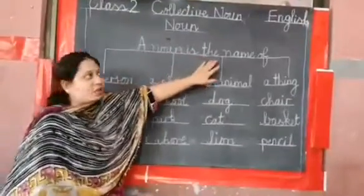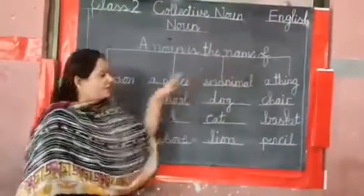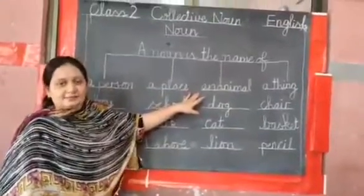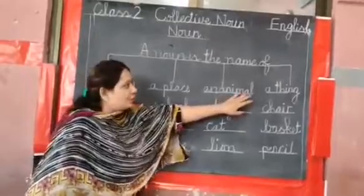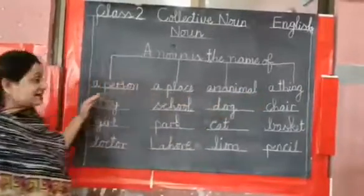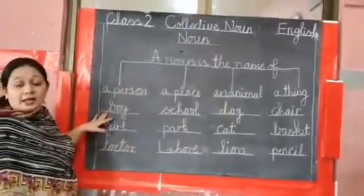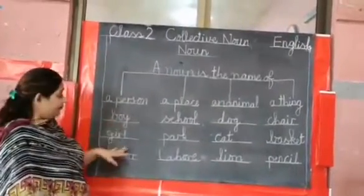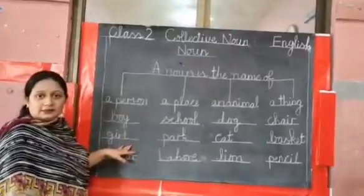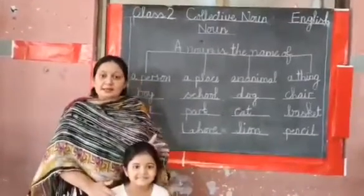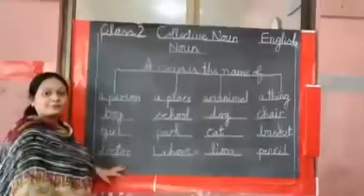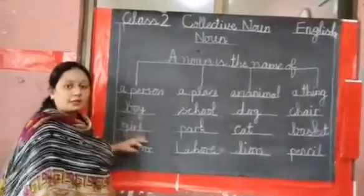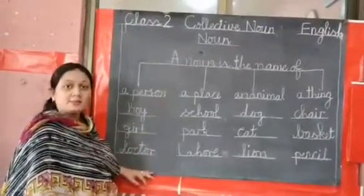A noun is the name of a person. Very good. A place, an animal. Very good students. A thing. For example, a boy is a person. A girl is a person. A doctor is a person. Boy, girl, doctor are persons.